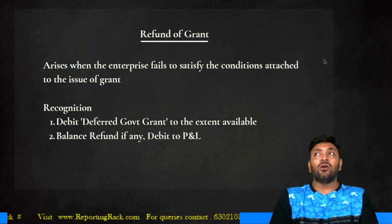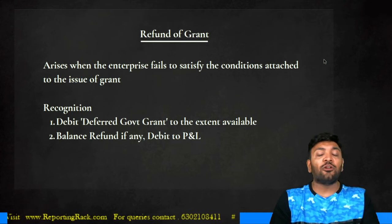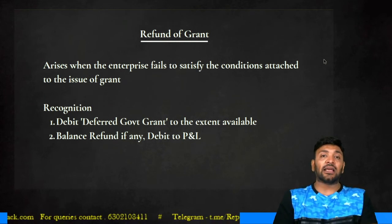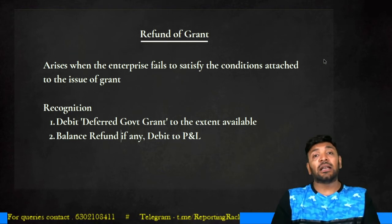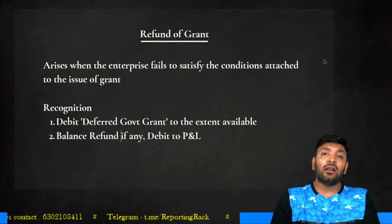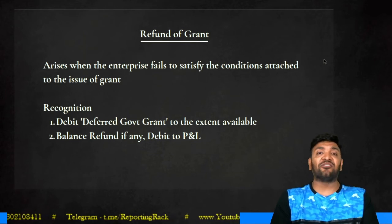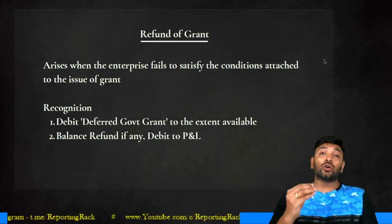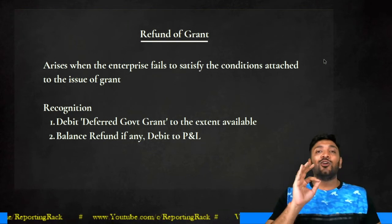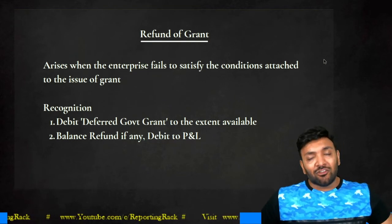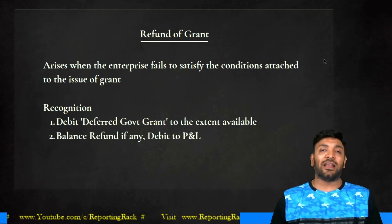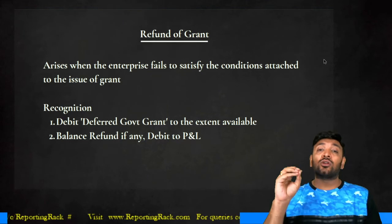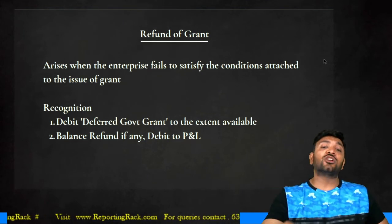Refund of government grant arises when the conditions attached to the grant are not fulfilled. The accounting entry credits bank and debits the deferred government grant account to the extent available. If the refund exceeds the deferred government grant balance — say refund is ₹100 but deferred government grant is only ₹60 — then debit deferred government grant ₹60 and debit P&L ₹40. P&L is debited because the deferred government grant was previously credited to P&L.